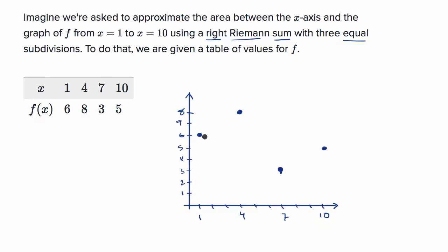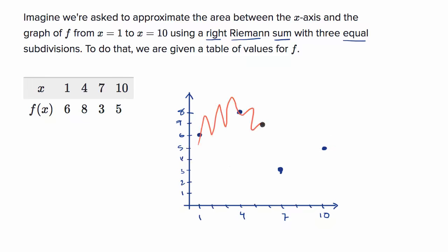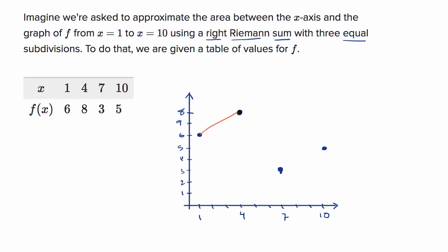We don't know exactly what the function looks like. It might oscillate really quickly, or it might be nice and smooth and just kind of connect the dots. We don't know. But we can still do the approximation using a right Riemann sum with three equal subdivisions.